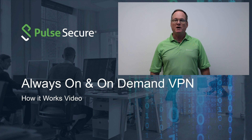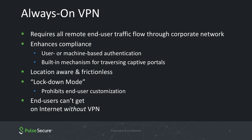Always On VPN requires that all remote user traffic flow through the corporate network. In this case, the VPN is established automatically when the user moves outside the corporate network, and the connection is terminated if the user comes back onto the corporate campus. Always On enhances compliance by reducing the chance of stolen credentials and data leakage. It can leverage user or machine-based authentication and has the intelligence to recognize a captive portal, enabling users to enter required information first so that the internet connection can be established prior to the VPN.